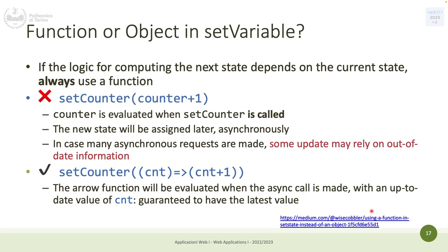There are fundamental rules to keep in mind. If the logic to compute a new state depends on the previous state, use the function version of setX to update the state. To update a counter, don't do setCounter(counter + 1) — instead do setCounter(oldState => oldState + 1) with an arrow function. Why? Because in the first case, counter is evaluated when setCounter is called, and the new state will be assigned later asynchronously.